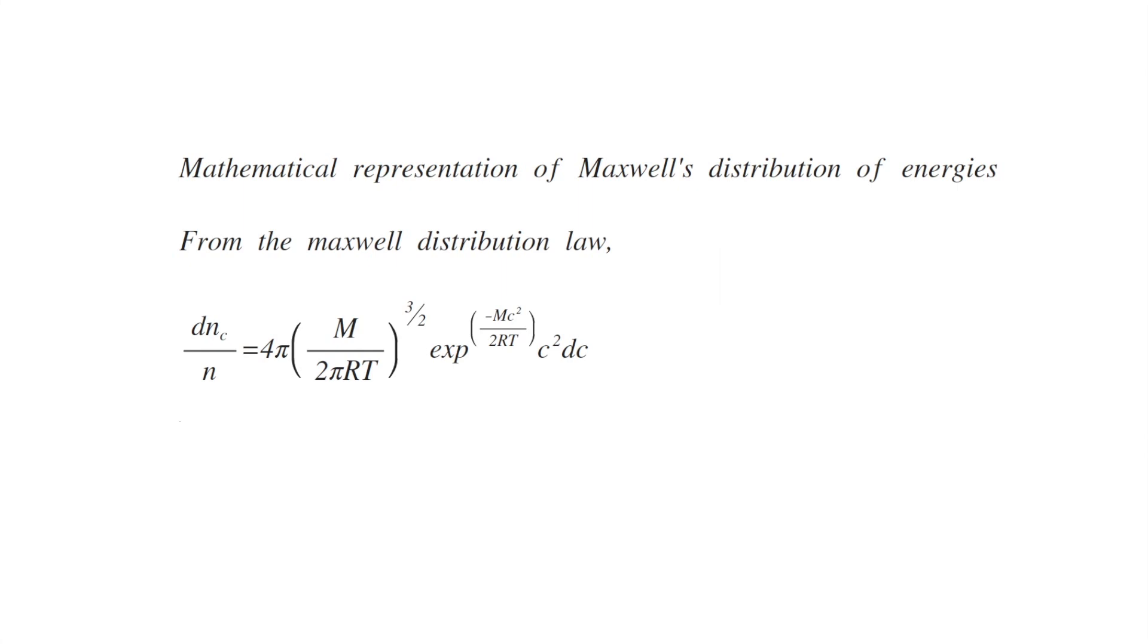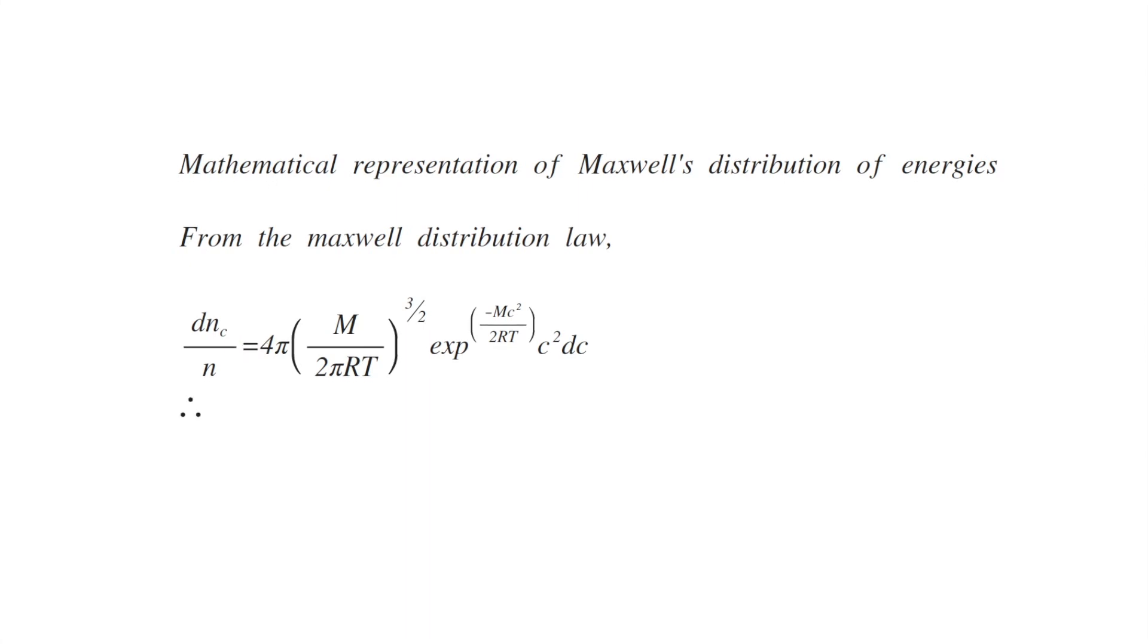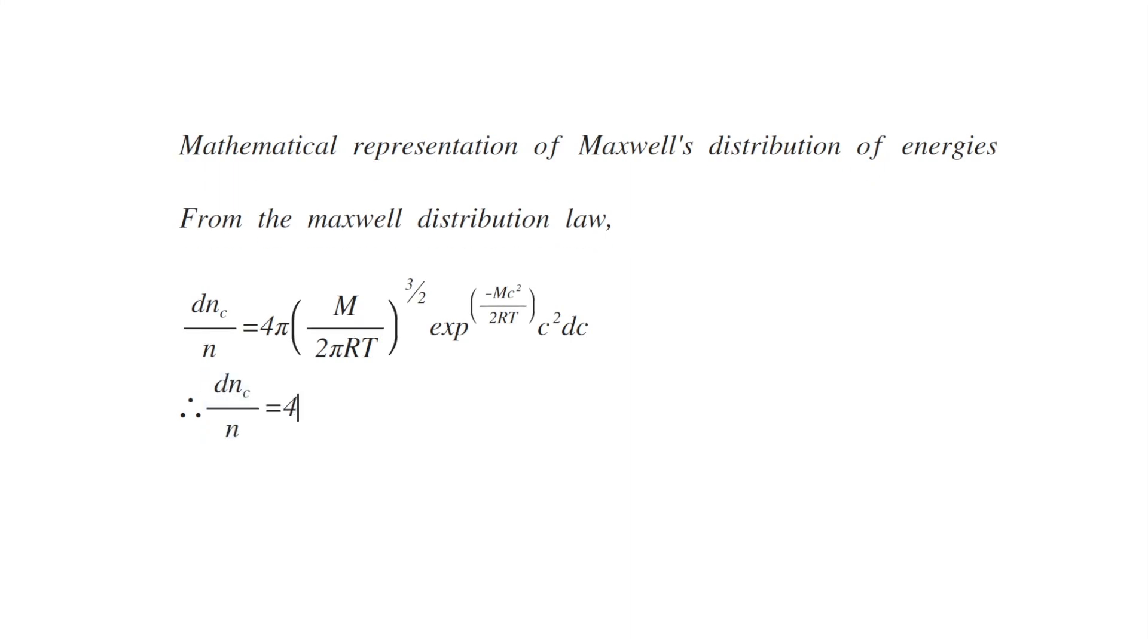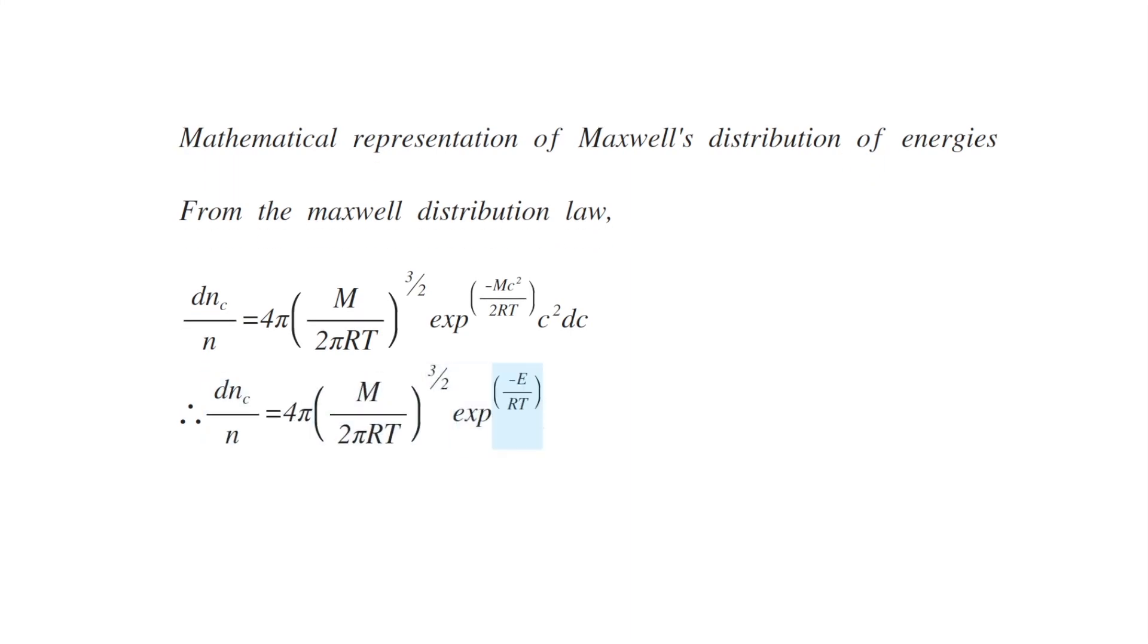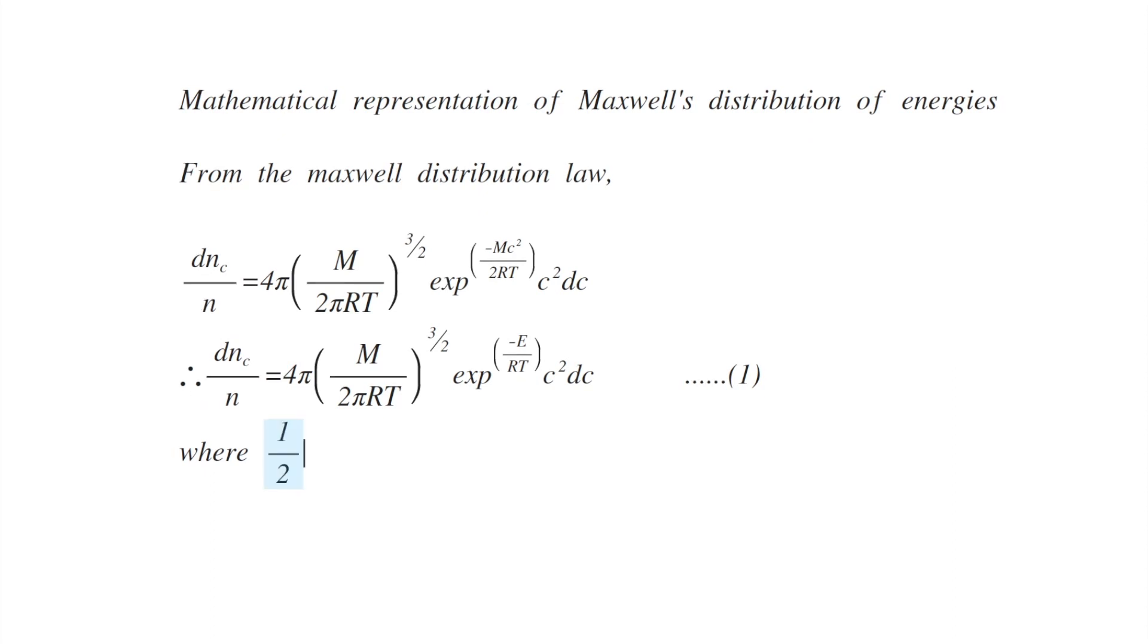dNc by n is the number fraction of molecules having velocity c. The equation can also be written as dNc by n equals 4 pi m by 2 pi RT power to 3 by 2, exponentially minus E by RT, c squared dc.